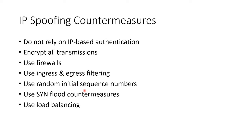TCP by default starts with zero, always. But you might be able to have some applications that start on some other number. Have countermeasures in place for SYN floods — either have something further upstream choking and filtering out all that traffic, or you have load balancing that can absorb that much.